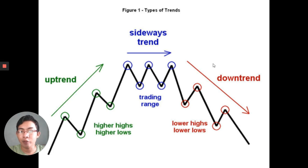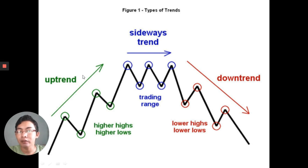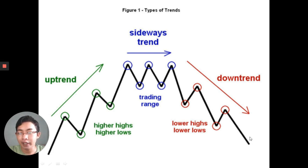The other name for Horizontal Analysis is Trend Analysis. We have three types of trends in analyzing your financial statement. An Uptrend is where the percentage change increases every year compared. A Sideways Trend means there is no change — it is fixed regardless of year. A Downtrend means the amount decreases through time, and there is always a negative percentage in the comparison.